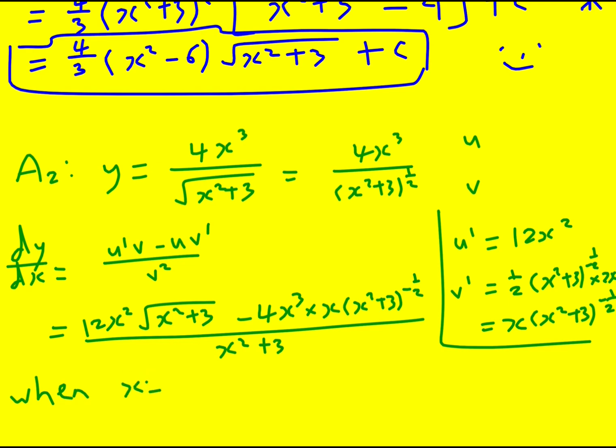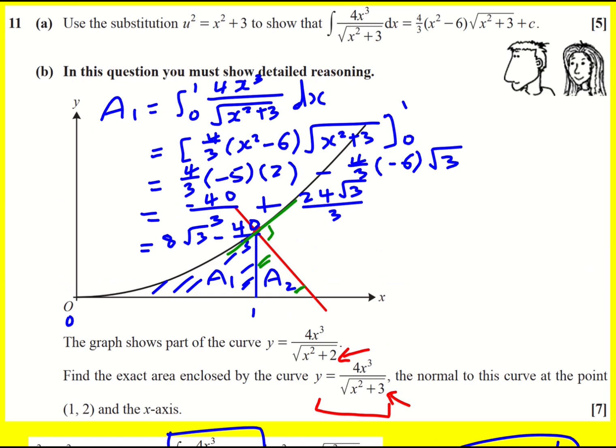So when x equals 1, dy by dx is going to equal 12 times 1, which is just 12. This is root 4, so 2, so I get 24. over here I get 4 times 1 times 1 times 4 to the minus a half, which is going to be 1 over 2, all over 4. So this gives 22 over 4, which is equal to 11 over 2. So that is the gradient of the tangent.